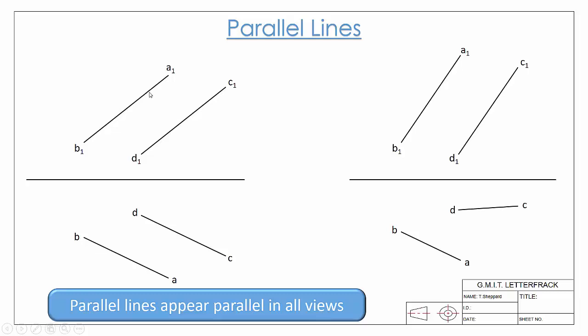On the left-hand side, we can see line AB and CD appear parallel, and they also appear parallel in our plan view, so they are truly parallel. Whereas over here, they appear parallel in our elevation but don't appear parallel in our plan view, so they're not parallel lines.